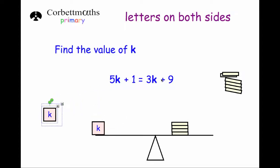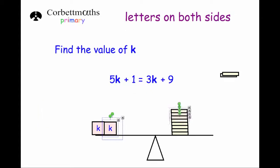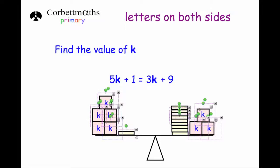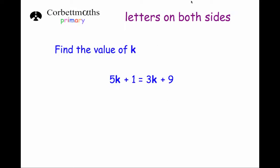With an equation with letters on both sides, we want to get rid of the letters on one of the sides. That first step — removing three k's from both sides — will be our first step when solving the equation. So our first step is to get rid of the lowest number of k's by subtracting 3k from both sides.